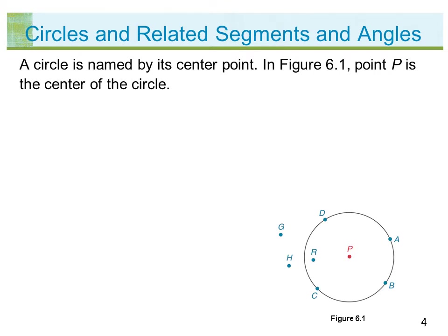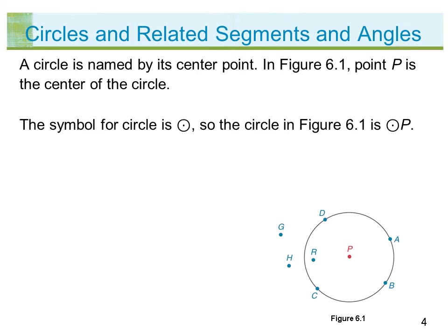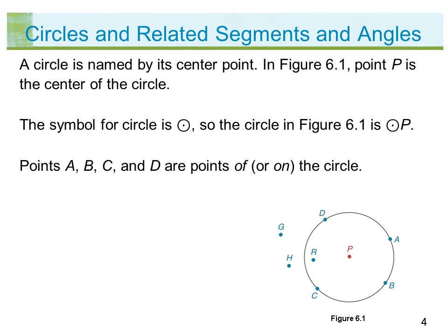In figure 6.1, point P is the center of the circle. The symbol for circle is a circle with a point in the center, so the circle in figure 6.1 is circle P. Points A, B, C, and D are points on the circle.